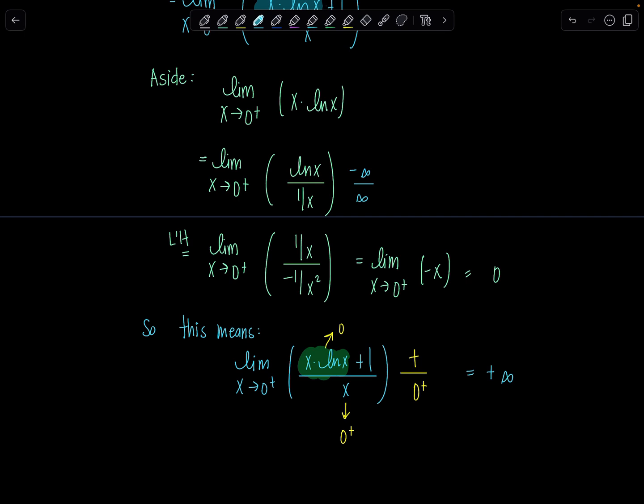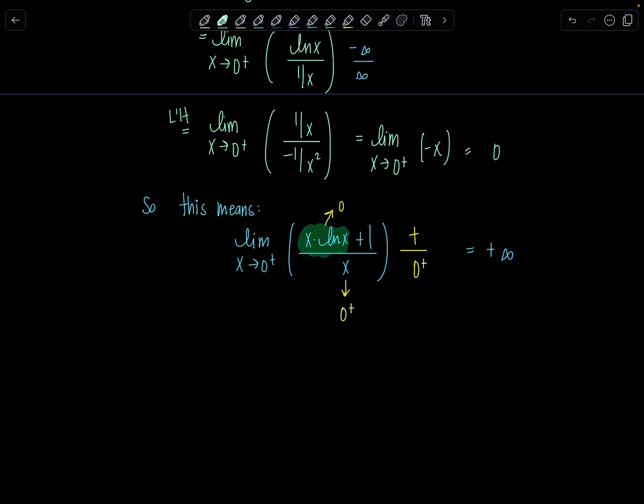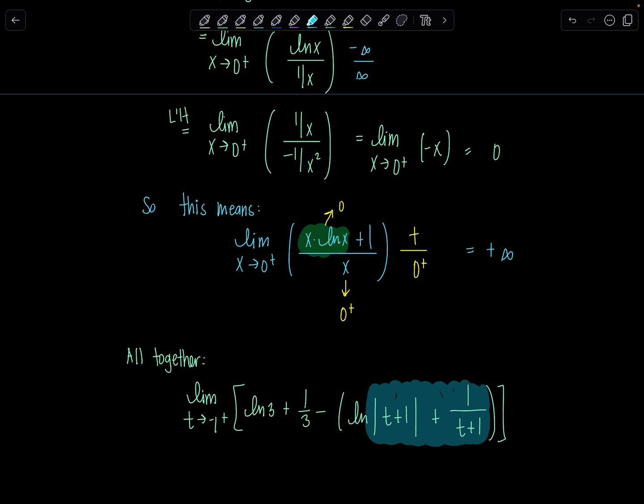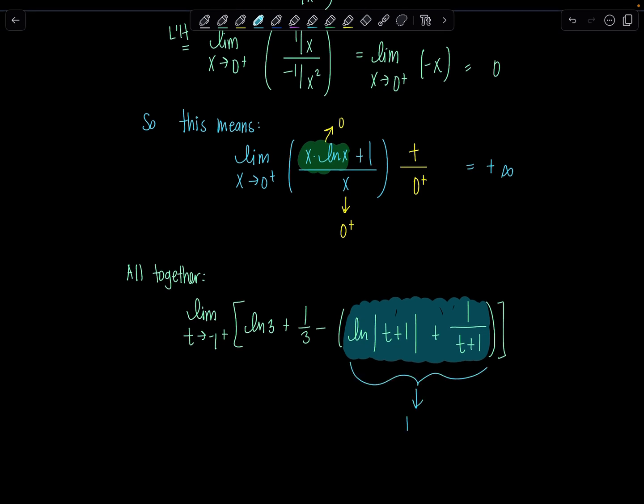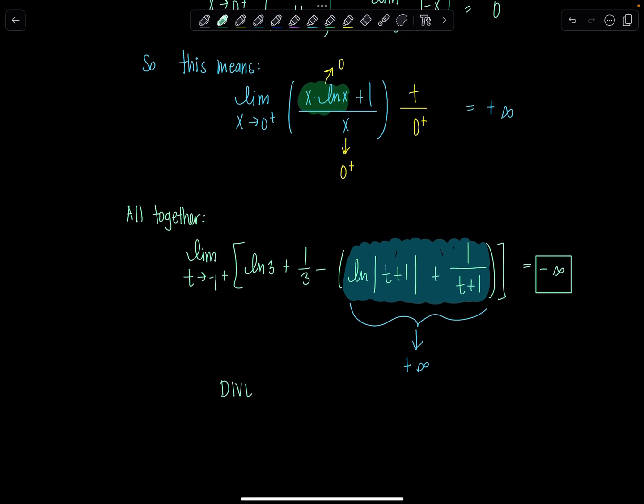So back to the original limit that we were doing. Okay. All together now, we have the limit, or we did. Perhaps you forgot. As t approaches negative 1 from the right, ln of 3 plus 1 third minus ln absolute value t plus 1 plus 1 over t plus 1. Okay. And we just showed all of this here, which was the equivalent of this limit, if you'll remember, goes to positive infinity. So all of this goes to positive infinity. So what can we conclude about the overall limit? We have some constant minus positive infinity that will go to negative infinity. Whew! We made it. Which tells me this improper integral is divergent.